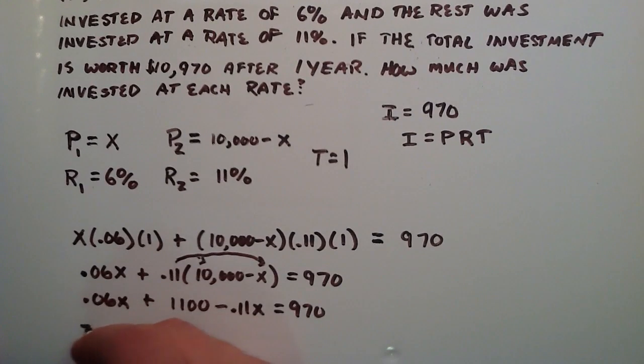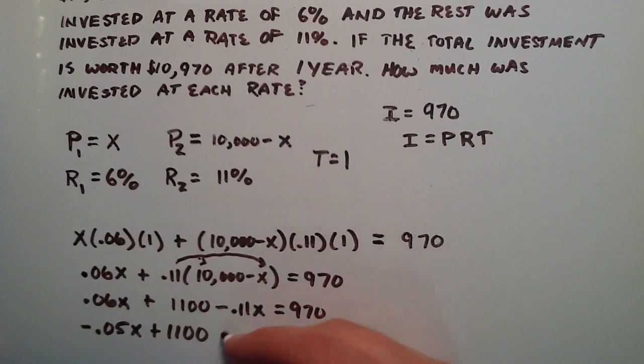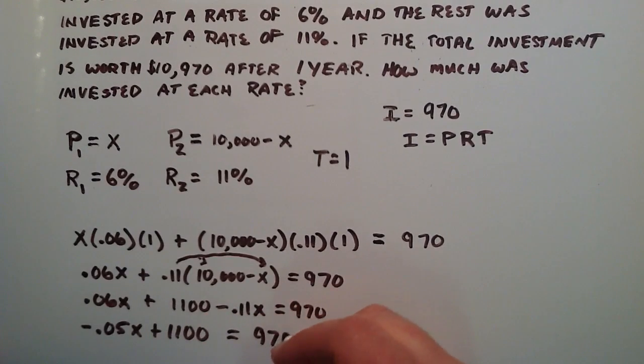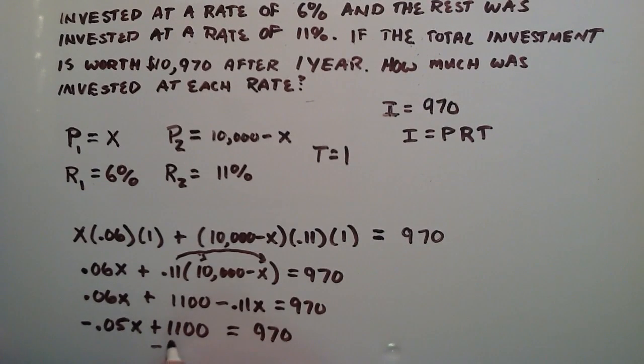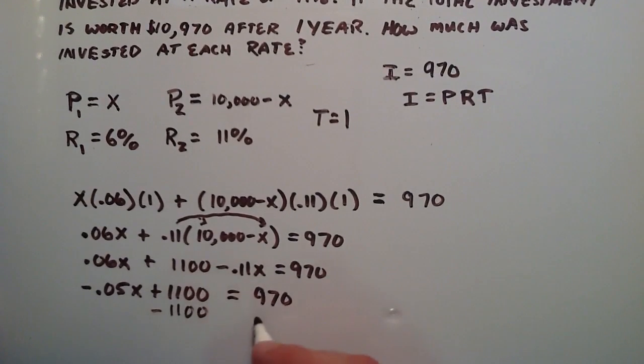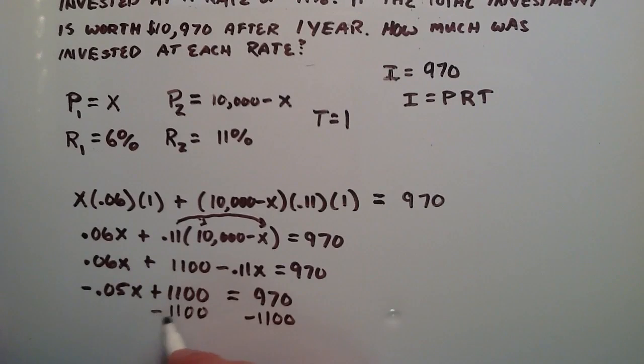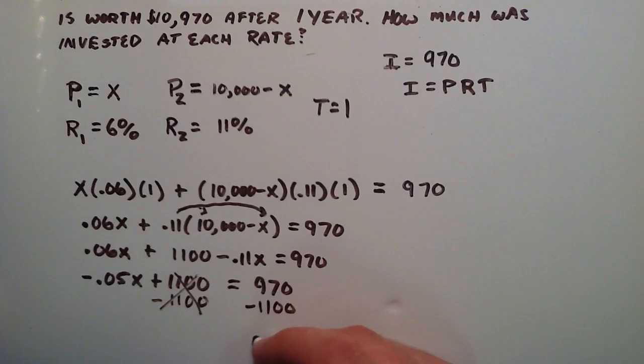And that gives us a result of negative .05X plus 1,100 is equal to 970. So now we're going to move this term to the other side. So the way we do that is we just subtract it from both the left and the right hand side. So we'll just go ahead and do that real quick. So 1,100 minus 1,100 is 0. 970 minus 1,100 is going to give us a negative 130.